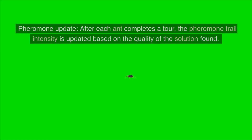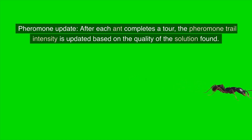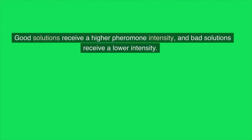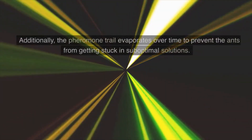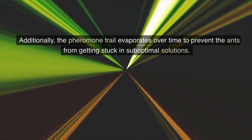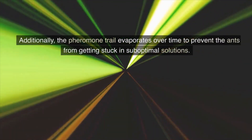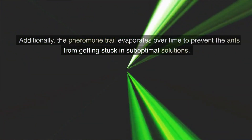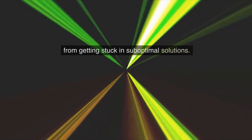This decision rule is known as the transition probability. In the pheromone update step, after each ant completes a tour, the pheromone trail intensity is updated based on the quality of the solution found. Good solutions receive a higher pheromone intensity and bad solutions receive a lower intensity. Additionally, the pheromone trail evaporates over time to prevent ants from getting stuck in suboptimal solutions.